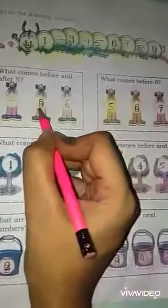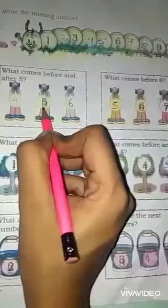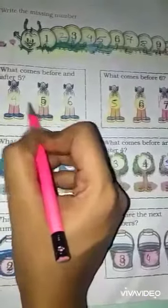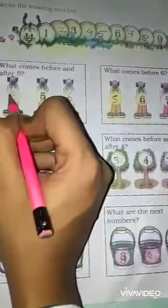So, 5. What is the before number? Means preceding number. It is 4. Yes. And the after number is 6. So, 4, 5, 6.